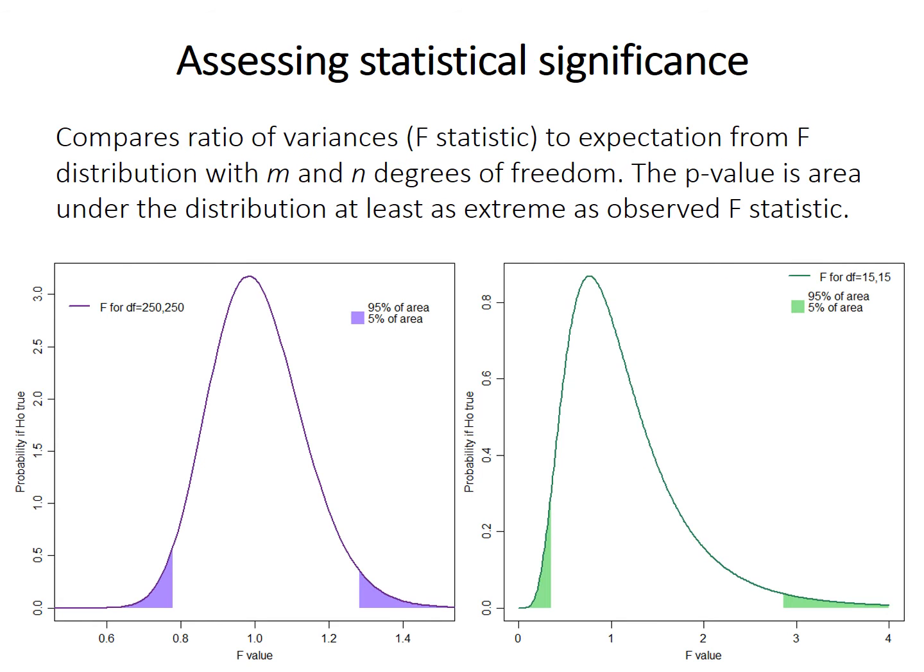To answer that, we can use the F-distribution. This distribution shows the probability of finding any particular value of the F-statistic for a given sample size, if the null hypothesis is true.